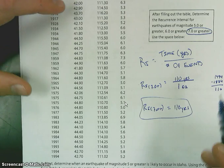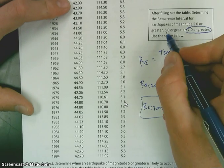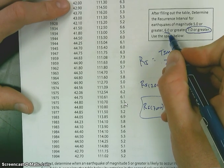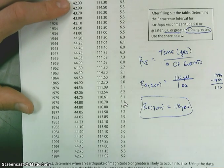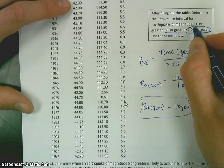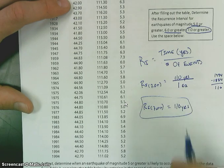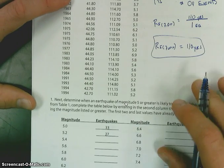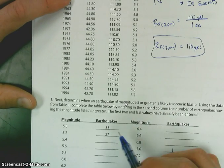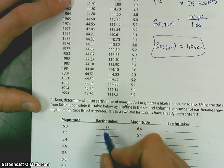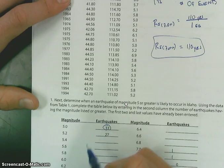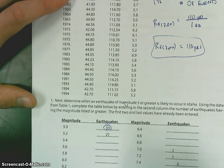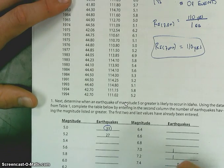Your job is going to be to figure out what the recurrence interval would be for a 6.0 or greater and a 5.0 or greater. You're going to have to go ahead and count up these earthquakes. The actual 5.0 is right here — you're going to have to count up more than that.